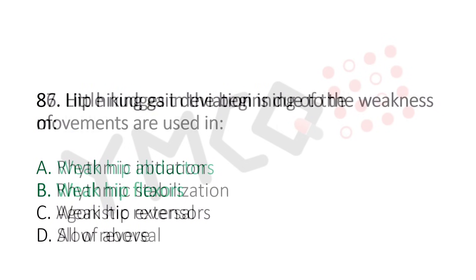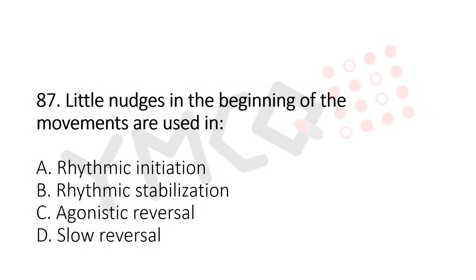Question 87: Little nudges in the beginning of the movement are used in — option A: rhythmic initiation, option B: rhythmic stabilization, option C: agonistic reversal, option D: slow reversal. The answer is option A: rhythmic initiation.